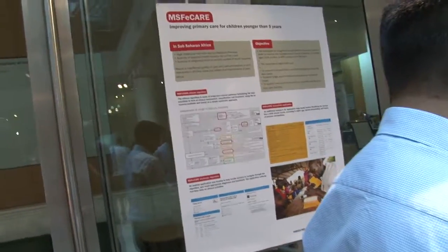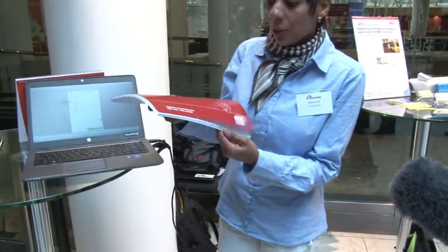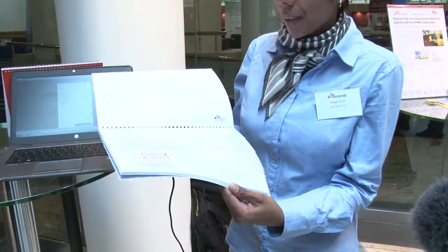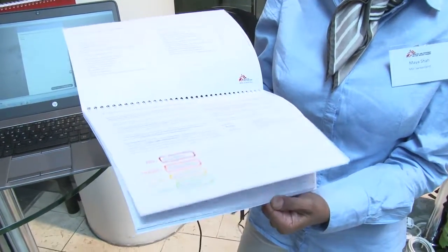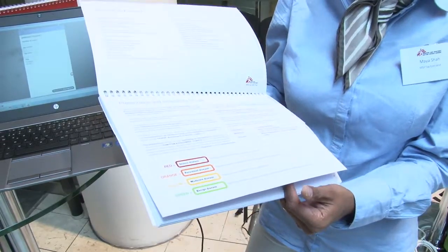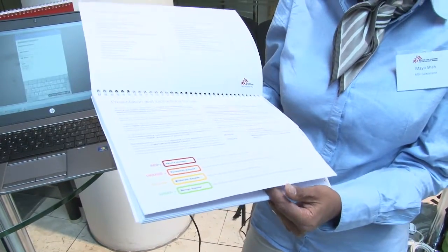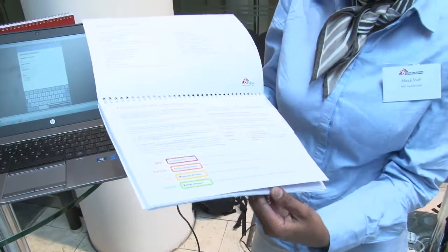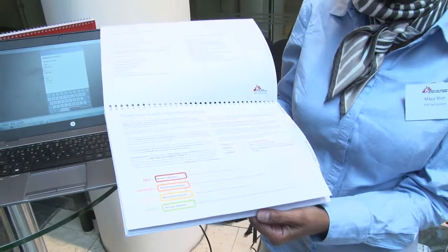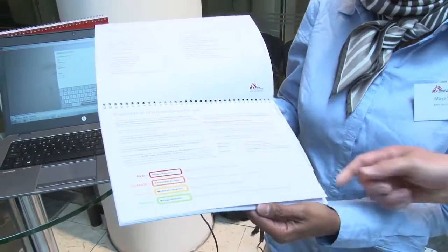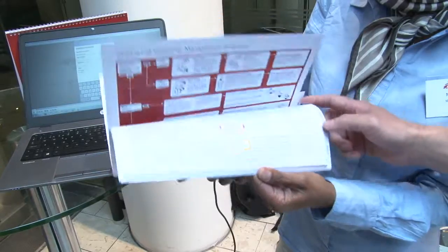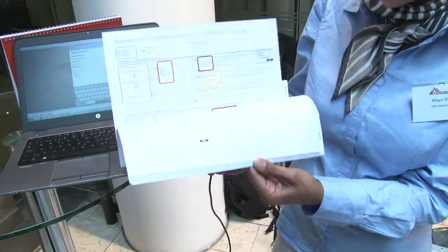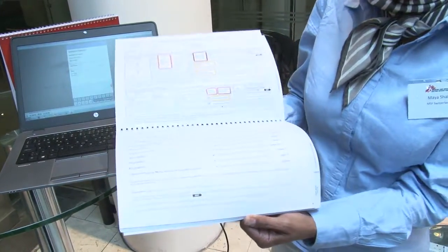Basically, it started off as a paper algorithm. So it was developed using evidence-based guidelines. We wanted to improve on the IMCI guidelines that existed and provide an MSF standard level of care in the field. So initially, the guideline was developed on paper, and as you can see, it's quite a complex paper algorithm.